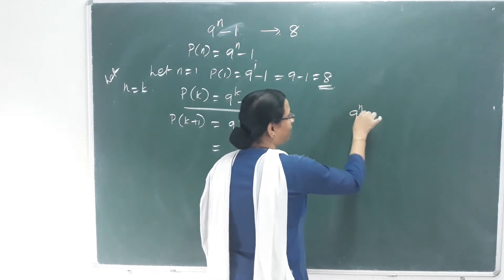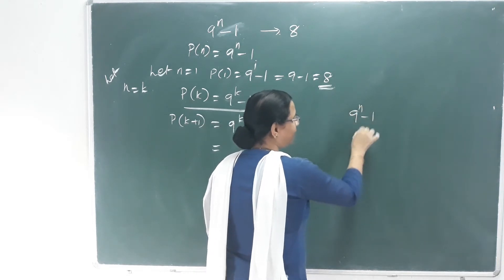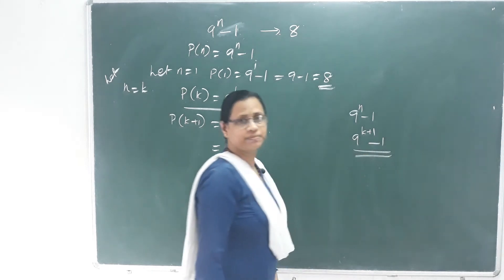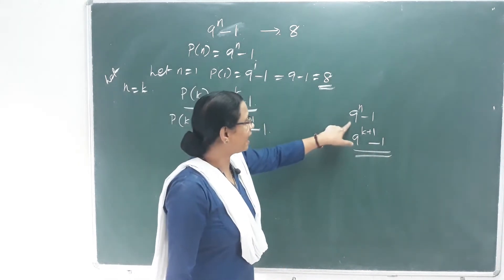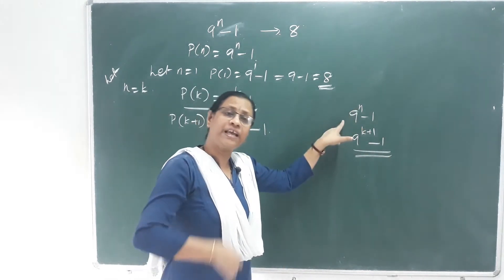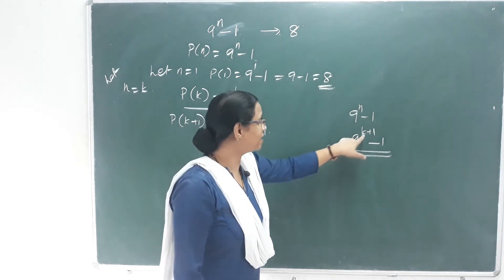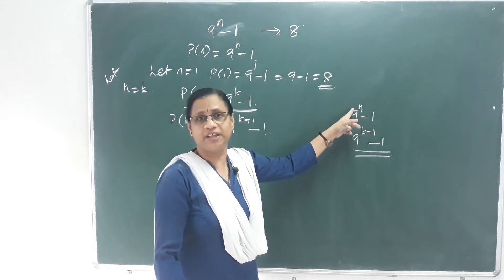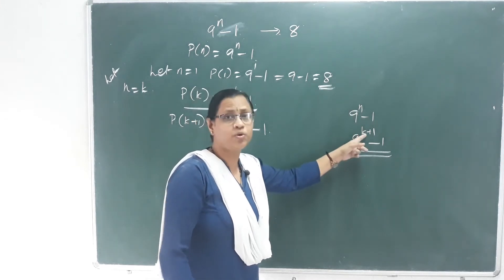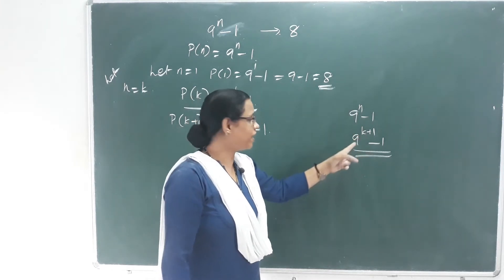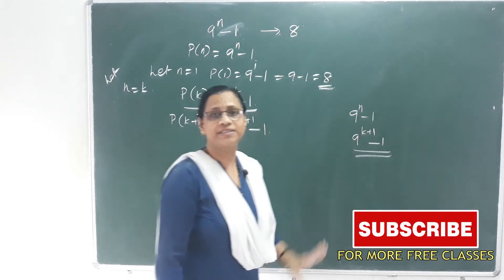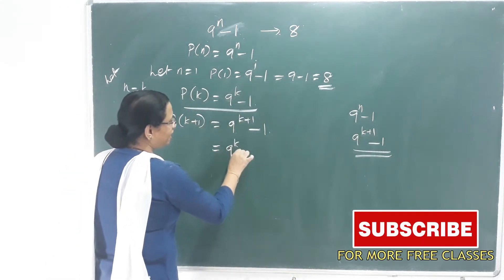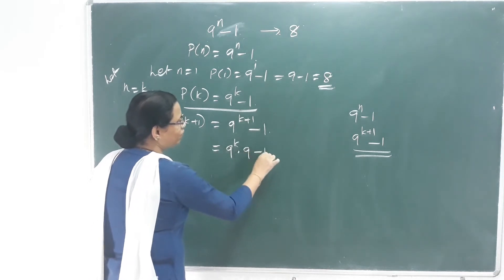The result is 9 raised to N minus 1, that is 9 raised to K plus 1 minus 1. This gives us 9 raised to K into 9 minus 1.